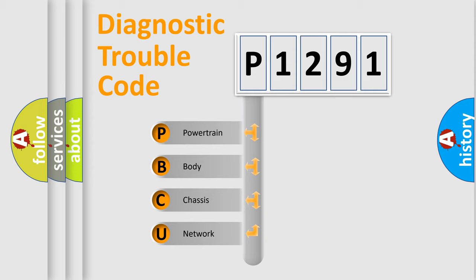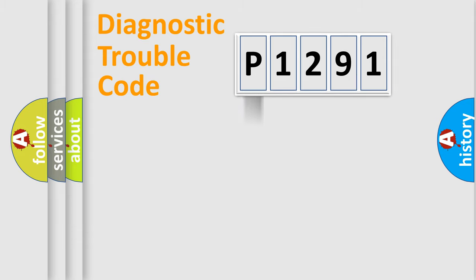We divide the electric system of automobile into four basic units: Powertrain, Body, Chassis, and Network. This distribution is defined in the first character code.